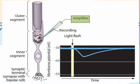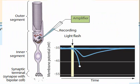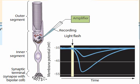A brighter light stimulus results in an even stronger hyperpolarization and an even greater reduction in neurotransmitter release. Note that this is the opposite of what other types of sensory receptors do — they typically depolarize and release neurotransmitters in response to a stimulus.